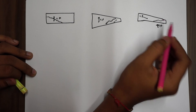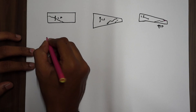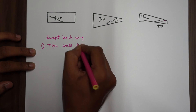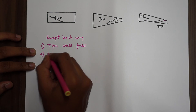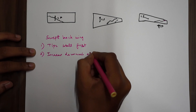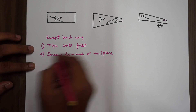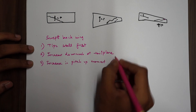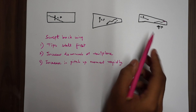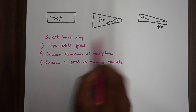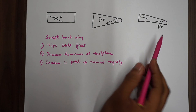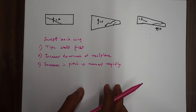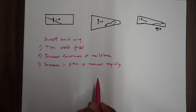For a swept-back wing, if the tip stalls first, this leads to an increase in downwash at the tail plane. This is a very dangerous form of stall — the tips stalling first leads to increased downwash at the tail plane, which further leads to a rapid increase in pitch-up moment, and the aircraft can go out of control easily.